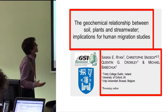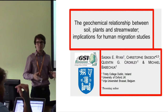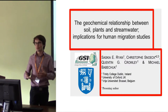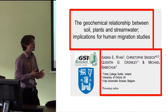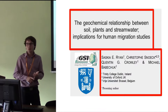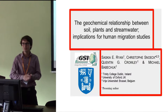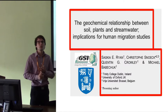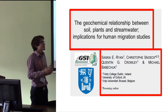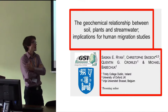What we're looking at is really how the rare earth elements, but most specifically strontium, grow from the soil into the plants and the streamwaters, and how we can use that as a baseline for migration studies. We often see baselines of biologically available strontium established using different methods — either plants, mammals, soil leachate, or streamwaters — and there's still not really a consensus on what's the best medium to use.